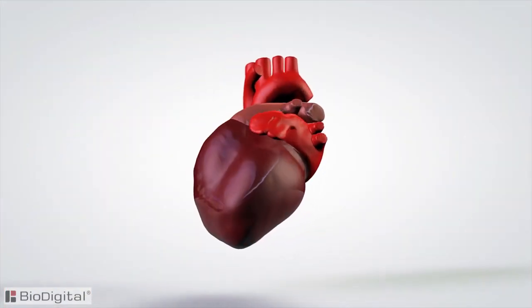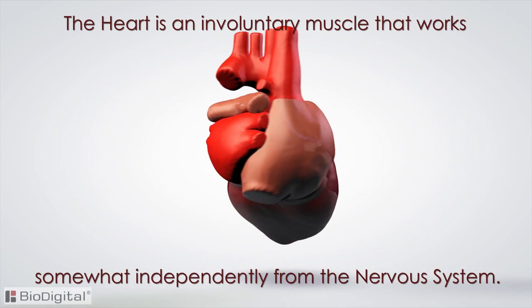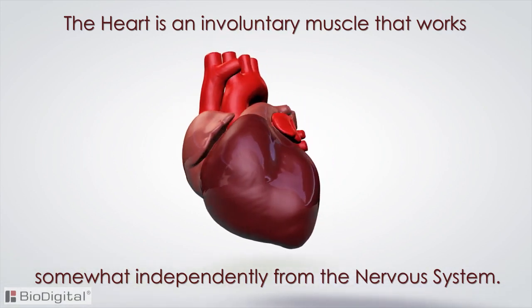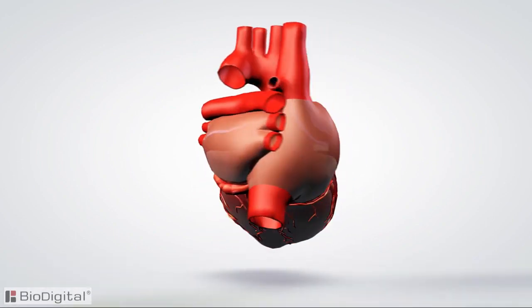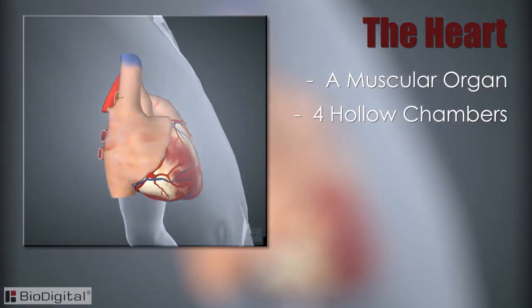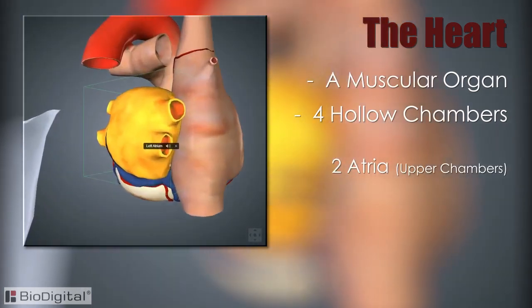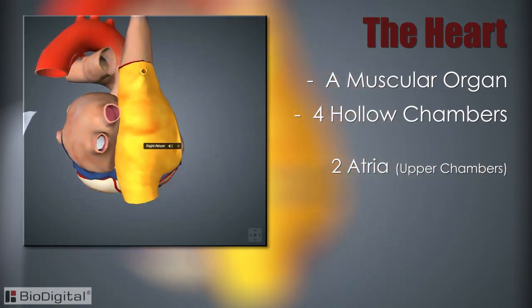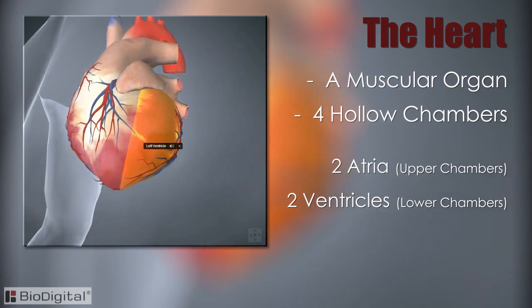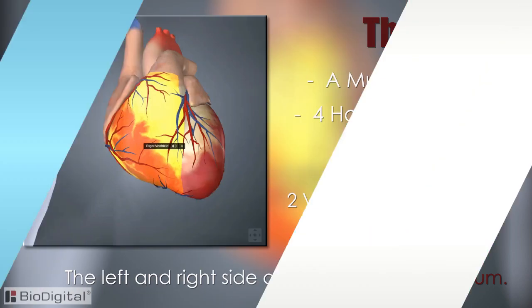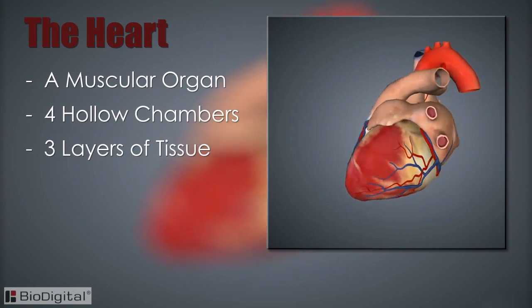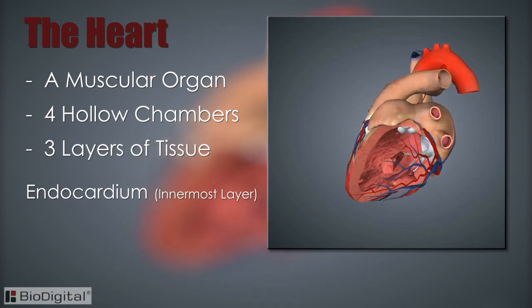The heart is an involuntary muscle that works somewhat independently from the nervous system, which will be explained in more detail later. The heart is a muscular organ with four hollow chambers. It consists of two atria, which are the upper chambers, and two ventricles, which are the lower chambers. The left and right sides of the heart are divided by the septum.